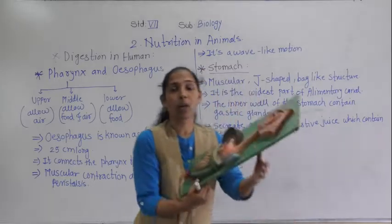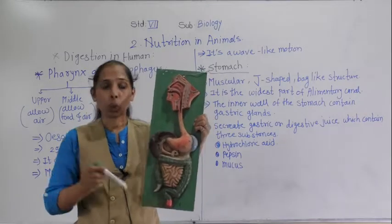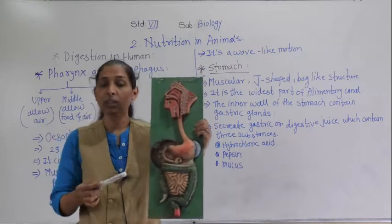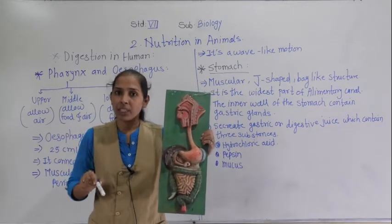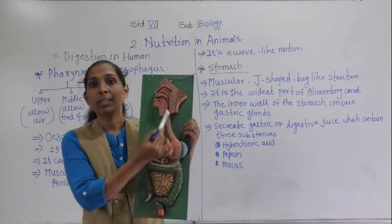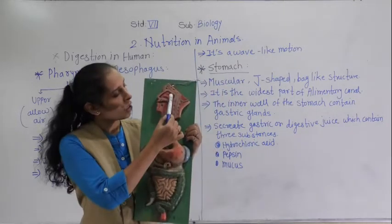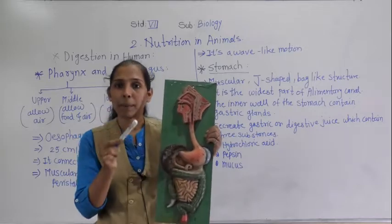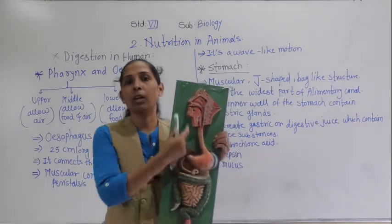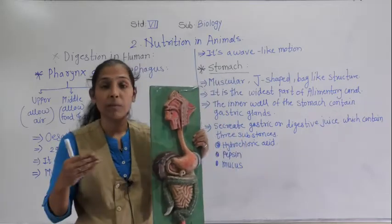Looking at the model of the digestive system, the mouth cavity or buccal cavity leads into the pharynx. The alimentary canal and the respiratory tract share the same passage, and that common muscular tube is called the pharynx. So the pharynx is a muscular tube shared by both the digestive tract and the respiratory tract.